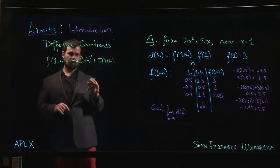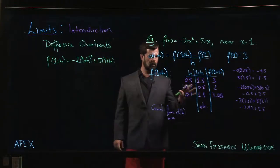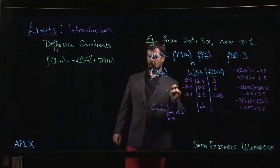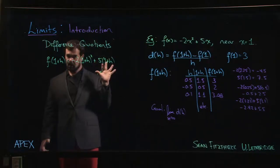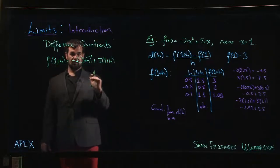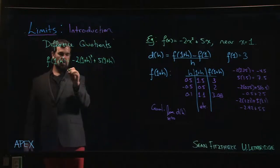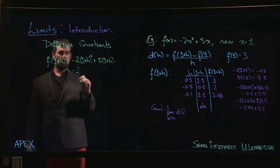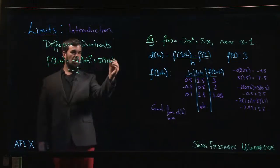Where students struggle on difference quotients, when they get wrong answers, it tends to be because they've made a mistake right here in this very initial step. They haven't correctly plugged the 1 plus H into the function. The next most likely culprit is an algebra error, but this sort of basic knowing how functions work trips up people more often than you might think.